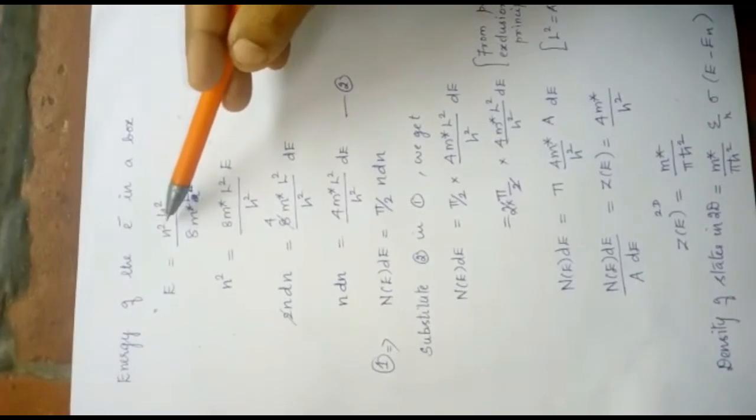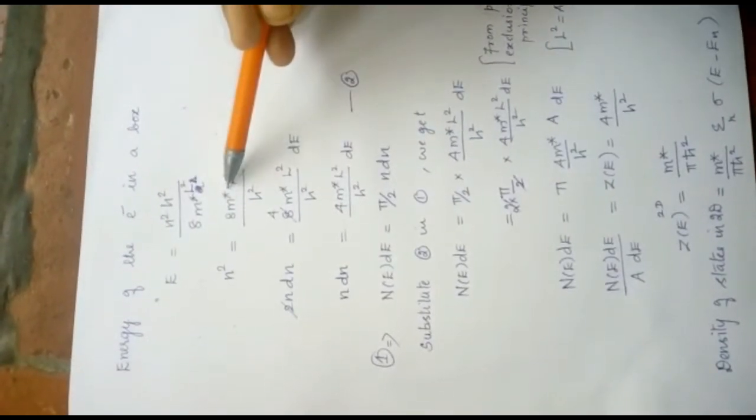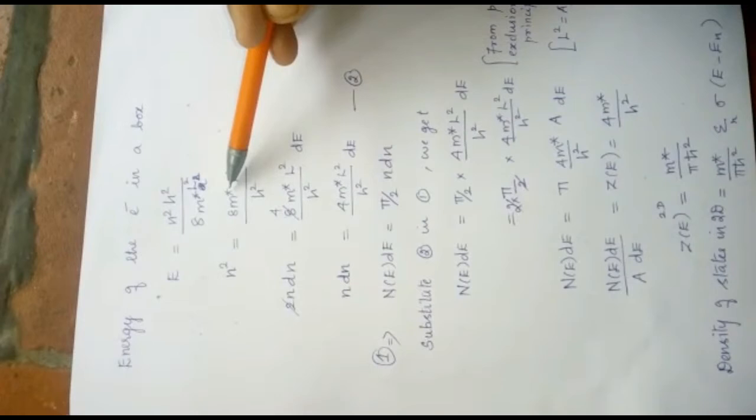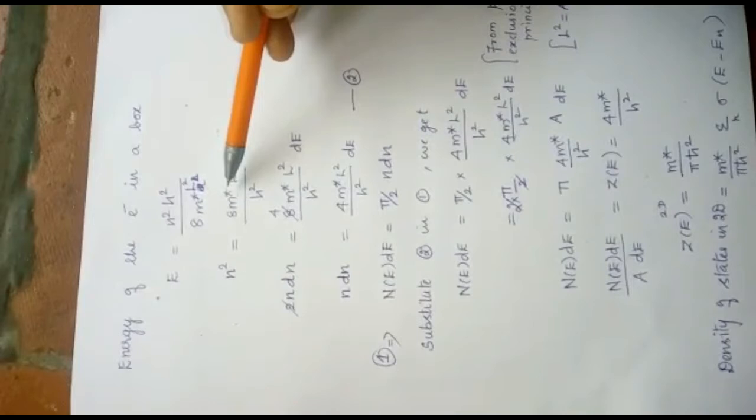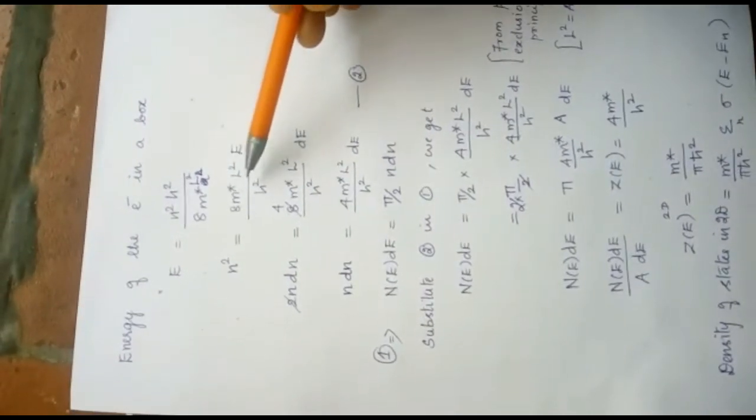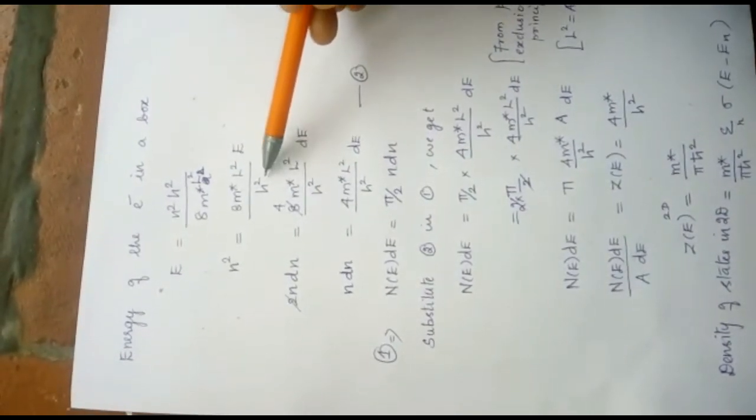From this, n square is equal to 8m star. Here, I am putting m star because in order to represent m as an effective mass of the electron. So 8m star L square E divided by h square.